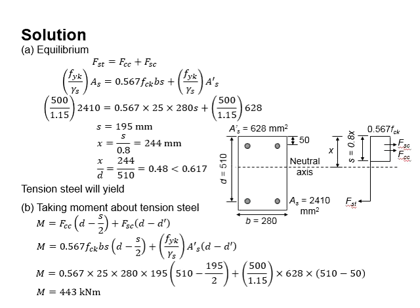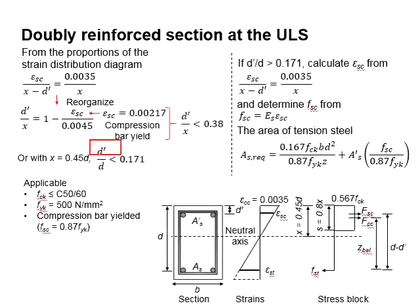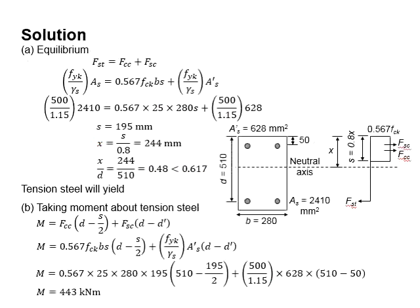Theoretically, you need to check the ratio of D prime per D to determine whether the compressive steel bar has yielded, since you assumed the steel bar has yielded throughout your calculations. Dividing 50 with 510, you obtain the ratio equals 0.098. The ratio is less than 0.171, which means the compressive steel bar has already yielded at the ultimate state.